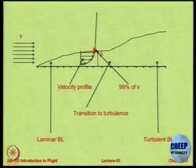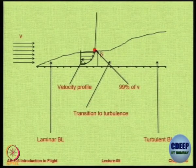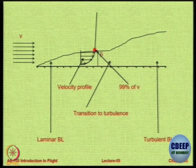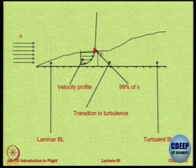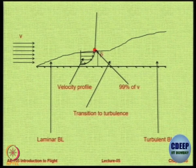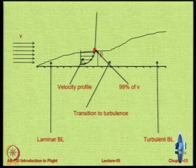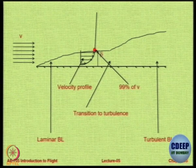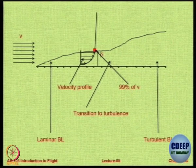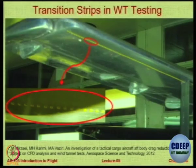Here is the full picture of the same thing seen earlier, now with the profile injected. You have a laminar boundary layer in the beginning until there is a transition, with these profiles shown. The red dot is the place at which the velocity becomes 0.99 times V-infinity — that is why it is called delta, the thickness.